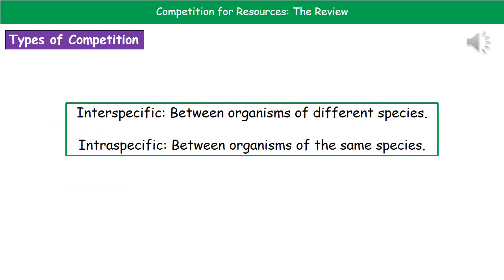When talking about competition we need to understand that there are two different types. The first is inter-specific competition, which is between organisms of different species — for example, two different species competing for the same food supply. The other type is intra-specific competition, which is between organisms of the same species. For example, two family groups of monkeys in the same area would be of the same species but competing for the same food supply, so that would be intra-specific competition.